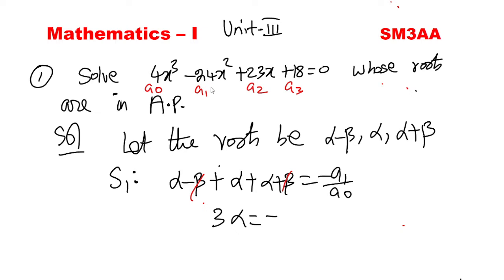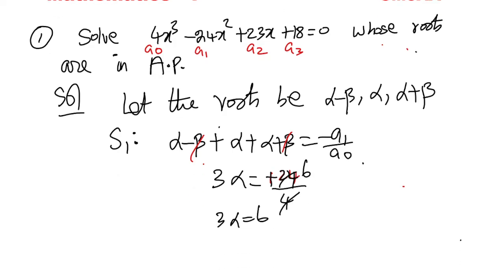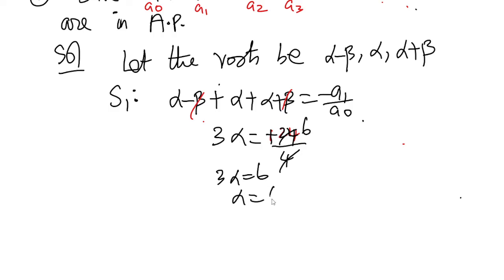So A1 is -24. Using the formula: minus A1 by A0 gives minus(-24) by 4, which is 24 by 4. So 3 alpha equals 6, and therefore alpha equals 2.